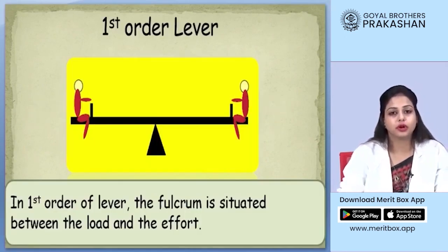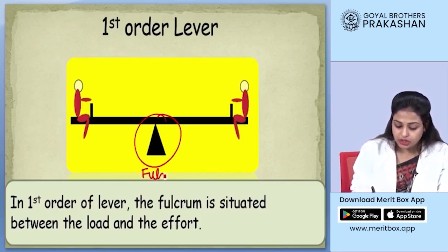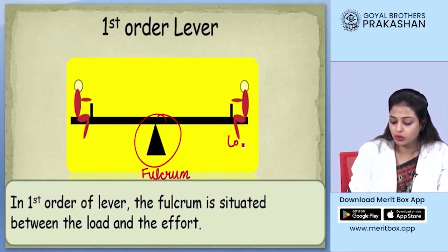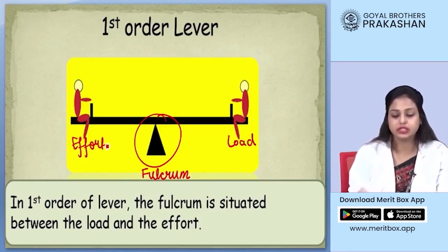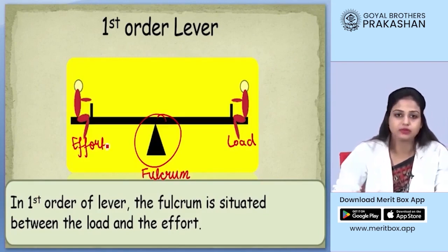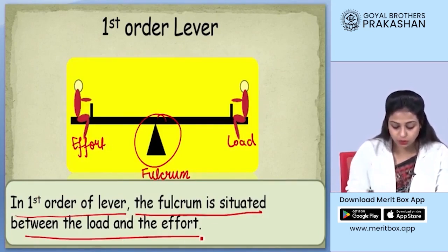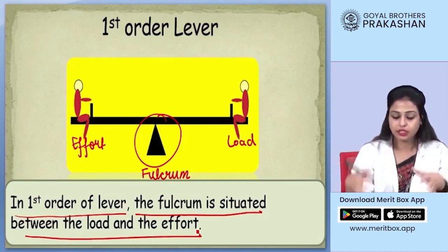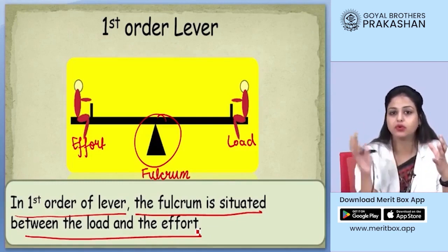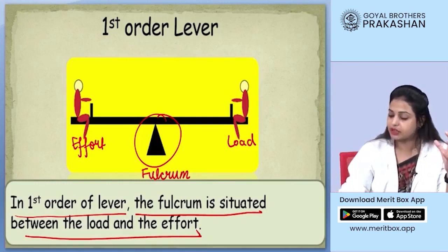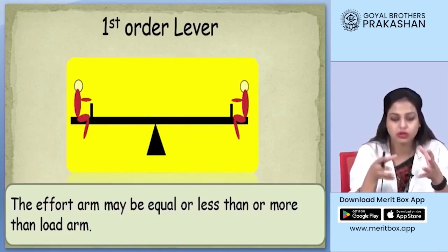In lever of first order, we already know that the fulcrum is situated in the center of the load and the effort. In this case we can shift the load and the effort on any of the sides. So in first order of the lever, the fulcrum is situated between the load and the effort. The fulcrum can be positioned anywhere between the load and the effort, so depending on this we can have various outputs from our first order levers.